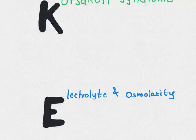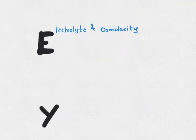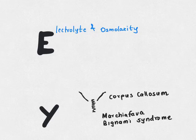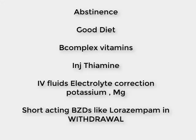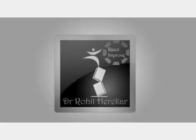E is for electrolyte and osmolar changes. The corpus callosum is white matter connecting the two cerebral hemispheres. In Marchiafava-Bignami syndrome, there is degeneration or demyelination of the corpus callosum, resulting in psychomotor and behavioral changes, hemiparesis, speech disturbances, and incontinence. The principles of management are common. Some conditions like cerebellar degeneration and neuropathy are usually irreversible. Hope you remember all the terms — thank you for watching.